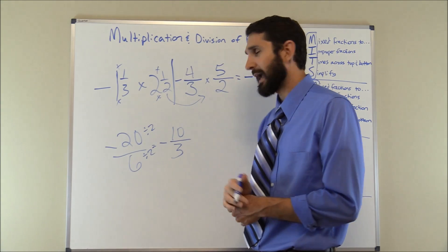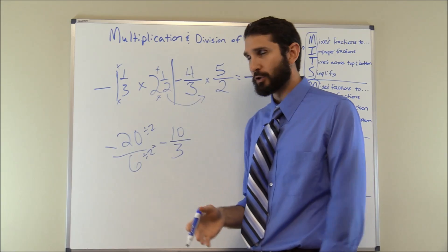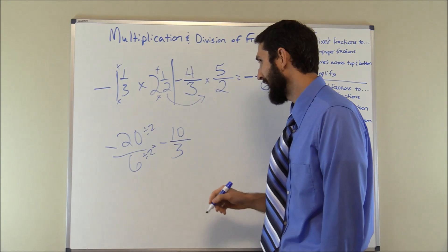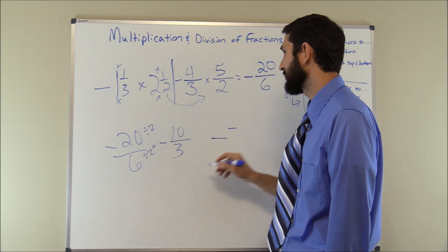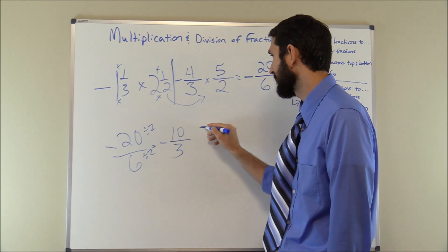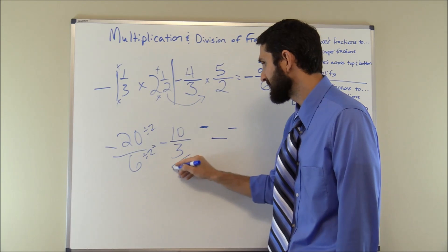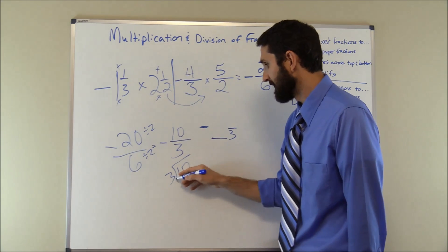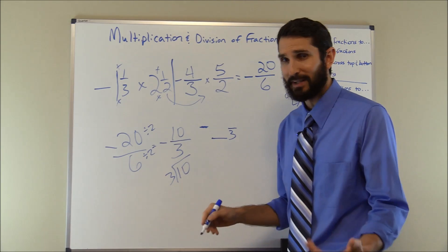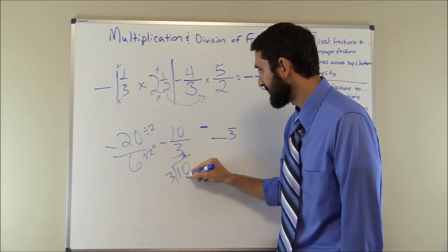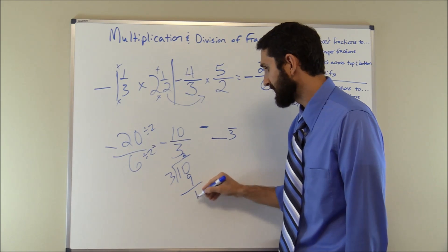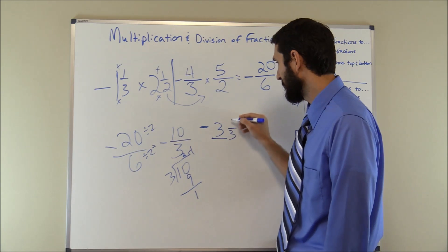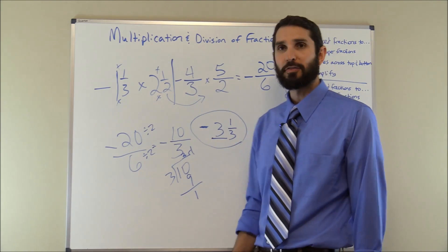We have negative ten over three, but since we have an improper fraction as our final answer, we convert it back to mixed number format. We divide ten by three: three goes into ten three times — three times three is nine, and ten minus nine gives a remainder of one. So the whole number is three and the remainder one goes over the denominator three. Our answer is negative three and one third.